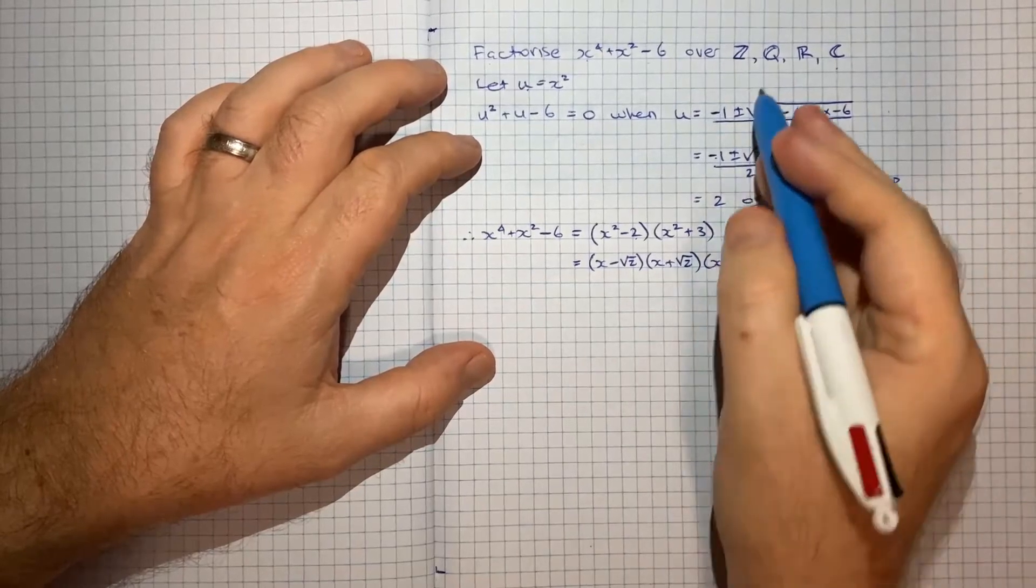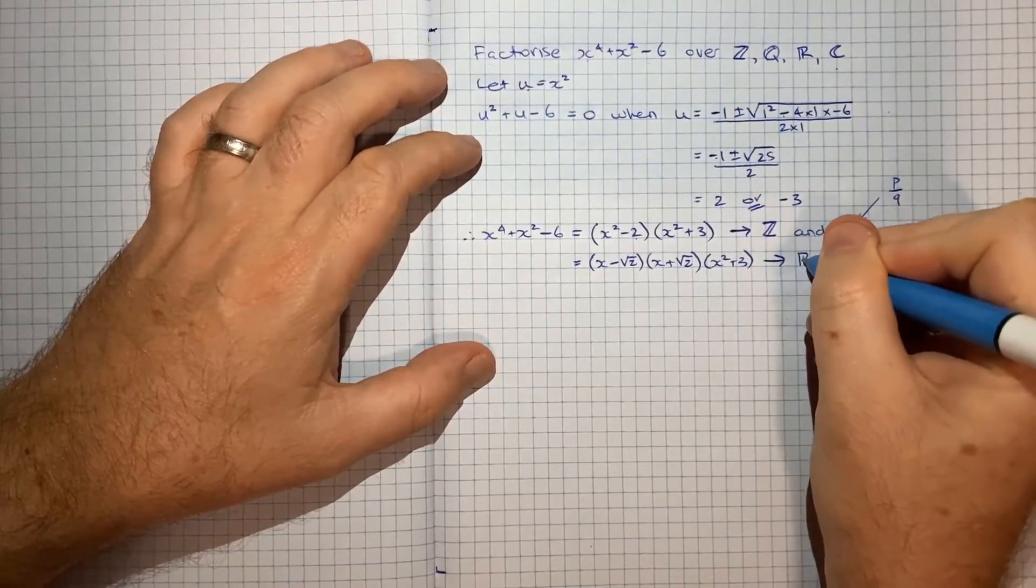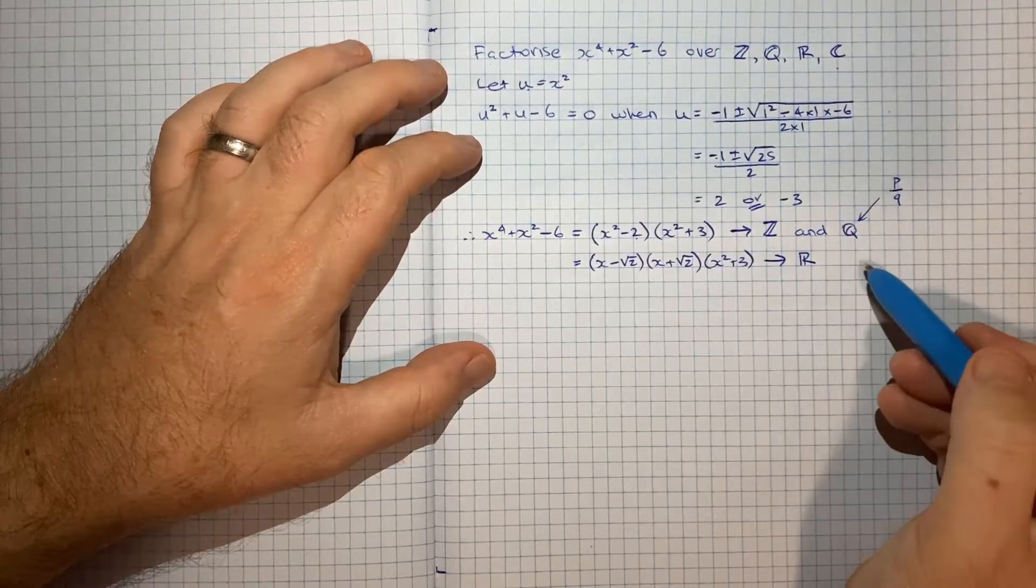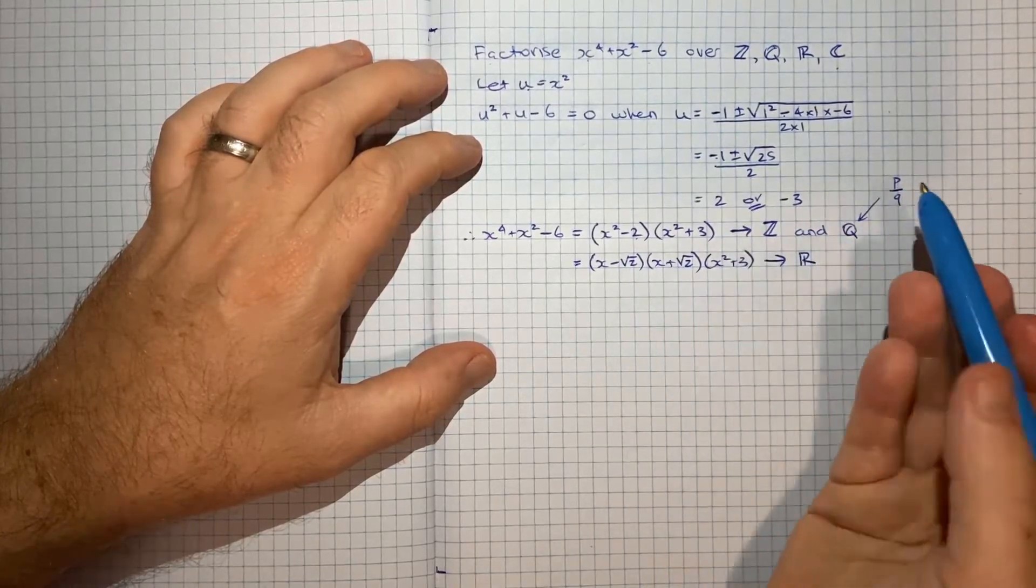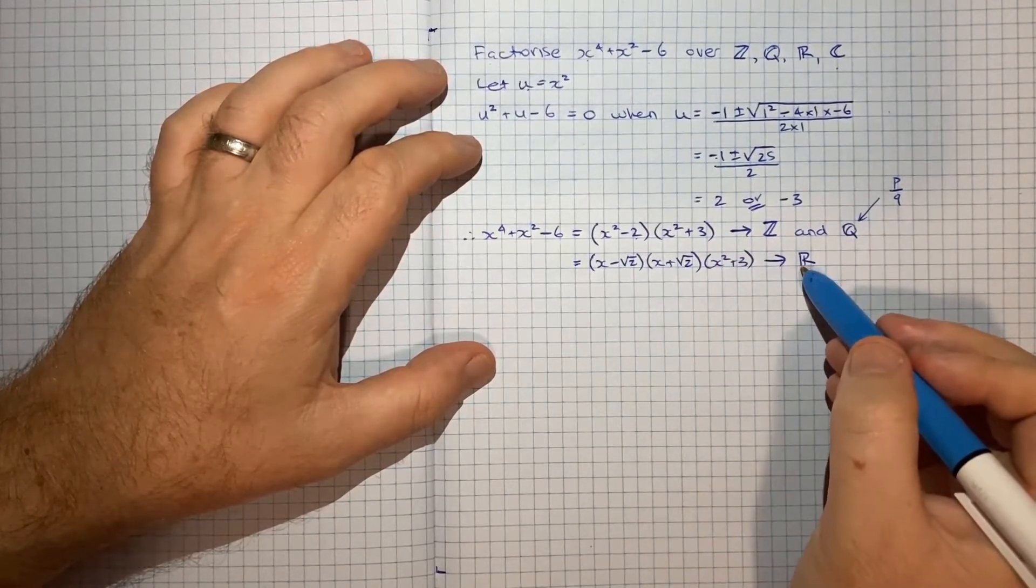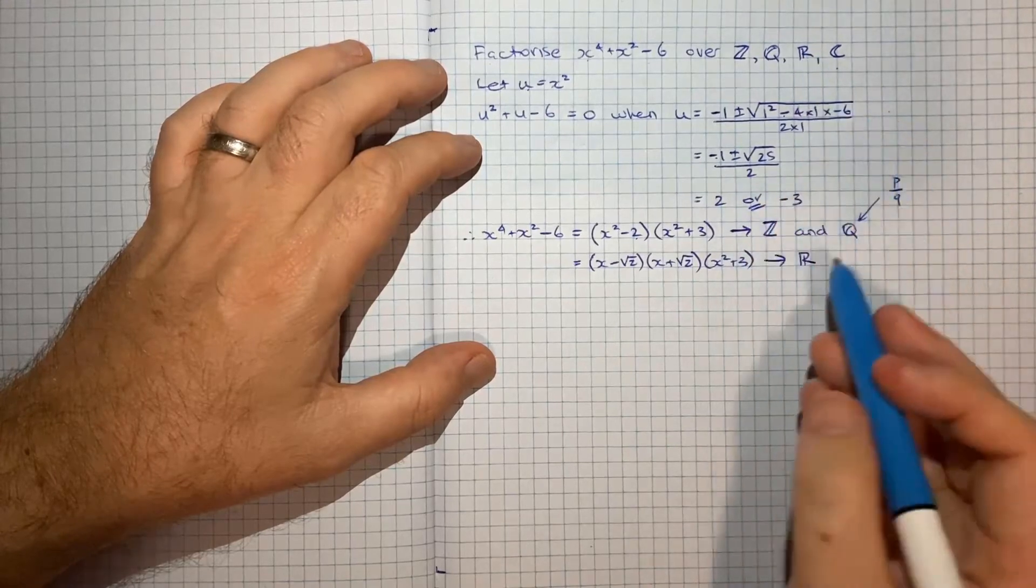And from there, I think we're covering the real set, which covers rational and irrational numbers. Root 2 is irrational. So I think that covers our real set.